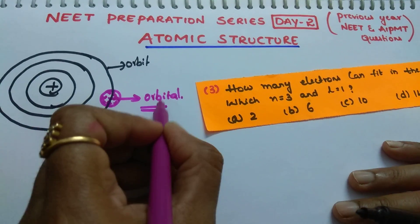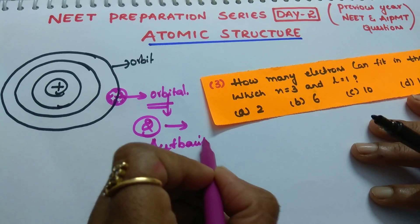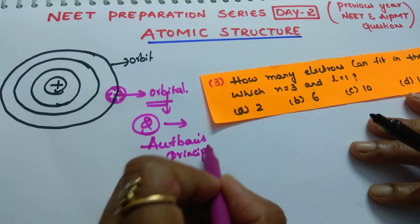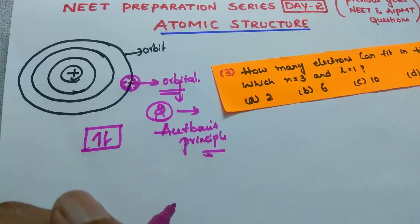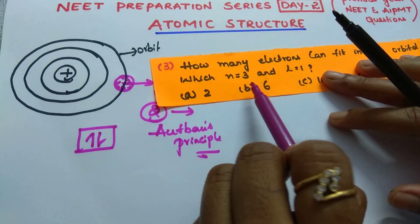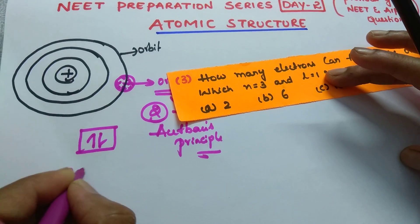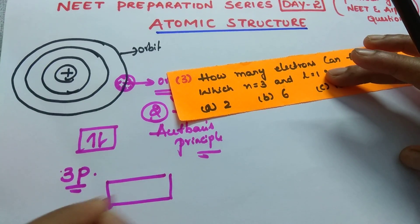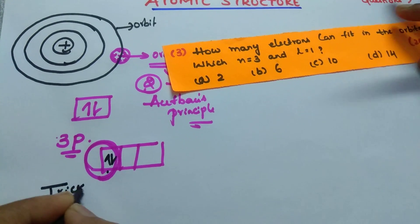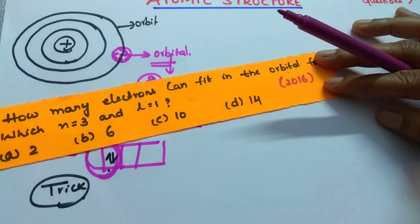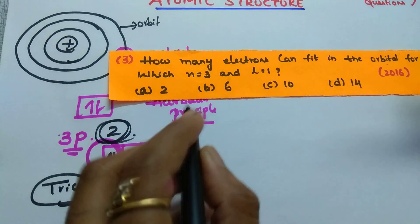So, in an orbital, maximum how many electrons can accommodate? 2 electrons can accommodate, according to which rule? The Pauli exclusion principle. Maximum 2 electrons can accommodate in an orbital with 2 opposite spins — one clockwise and another anticlockwise. Here they are given n=3 and l=1. So n=3 means principal quantum number is 3, and l=1 means it is 3p. In an orbital, how many electrons can accommodate? Maximum 2 electrons. When they ask how many electrons can accommodate in a particular orbital, your answer will be 2 only. Your answer is 2.